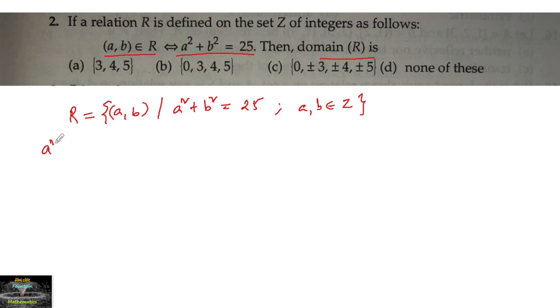The condition a² + b² = 25 will be satisfied by certain integers. For example, 0² + 5² = 25, which equals 25. Also, 5² + 0² = 25.